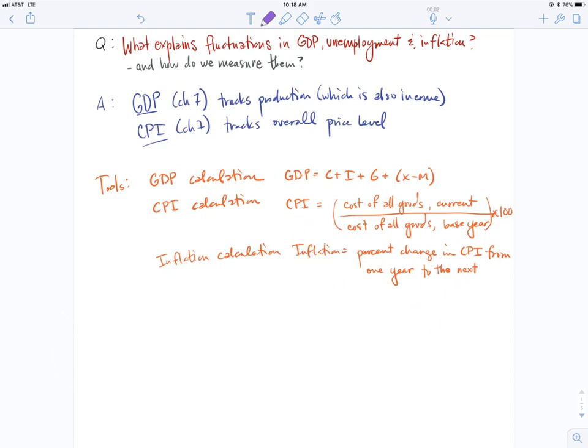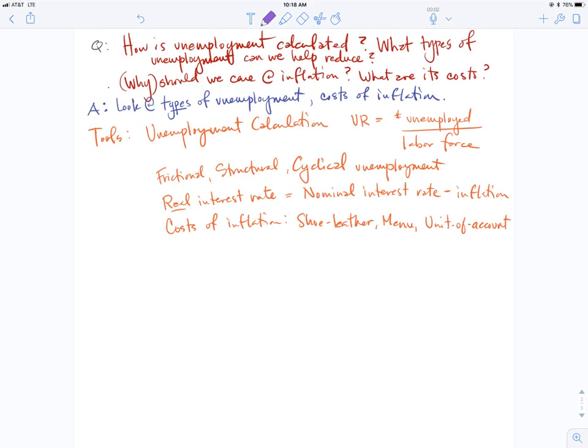Moving on to unemployment and inflation in chapter 8, we look at how is unemployment calculated and specifically what kinds of unemployment are there. Some of them will be sensitive to government policy and can be reduced, and some cannot. Then why should we care about inflation, understanding inflation just a little bit more.